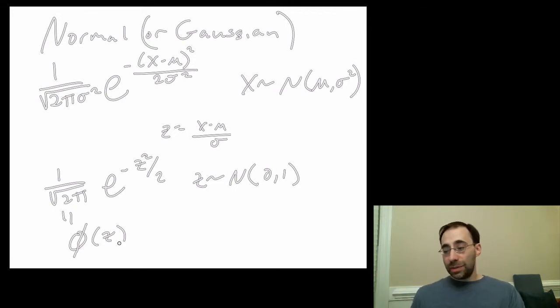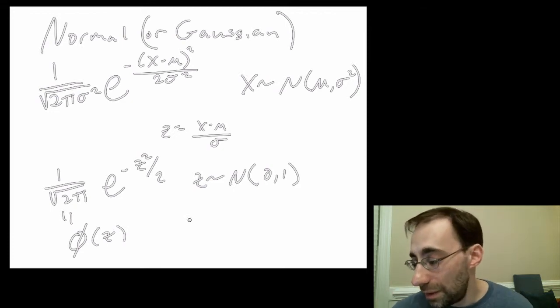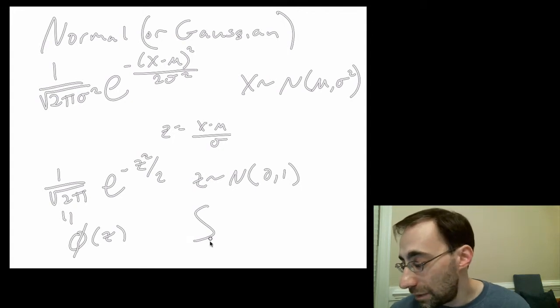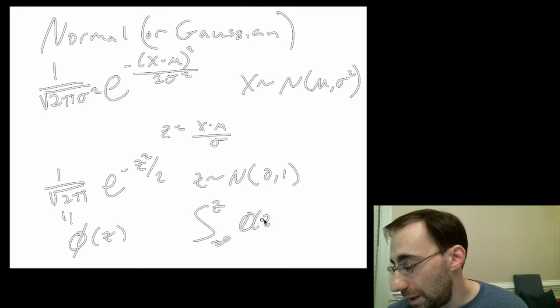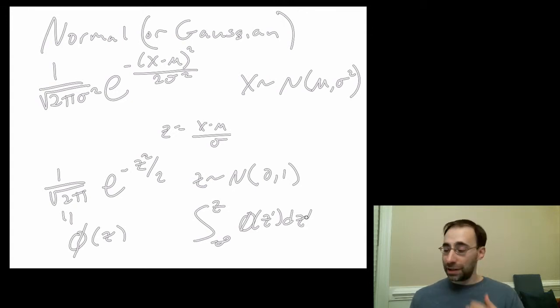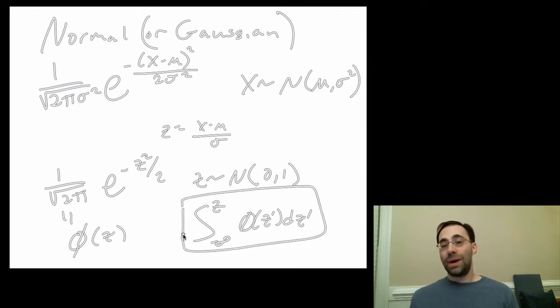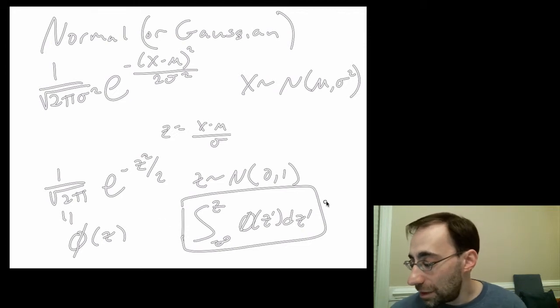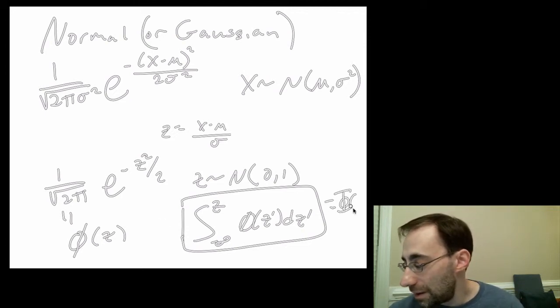Now, these are the distributions, the PDFs. The CDFs are obtained by integrating the PDFs, right, from, for the standard one, for instance, from negative infinity to some particular value of z. You would integrate phi of z prime, dz prime. Remember, the bounds must be different from the integrand, the variable of integration. Problem is, this thing right here has no actual closed form analytic solution. I can't write down a function for this. I can just talk about it.